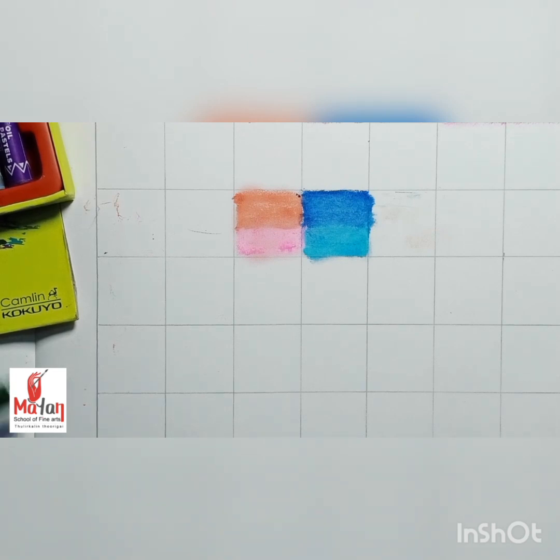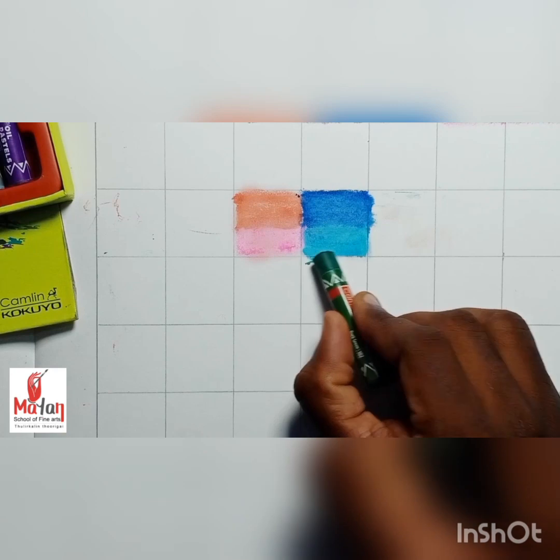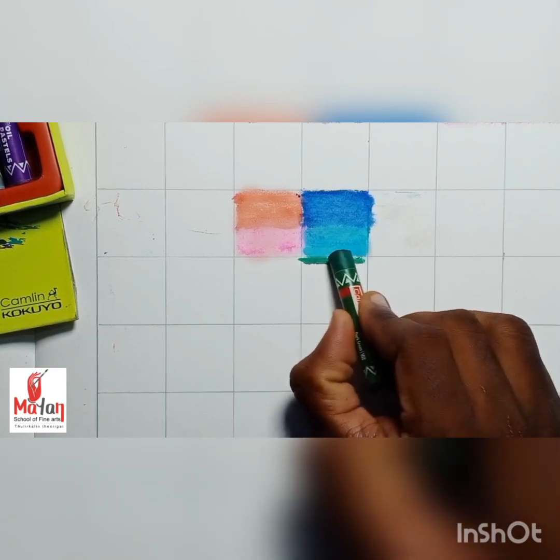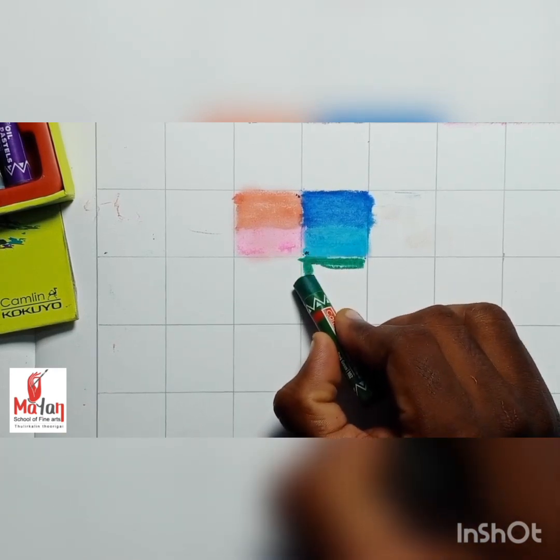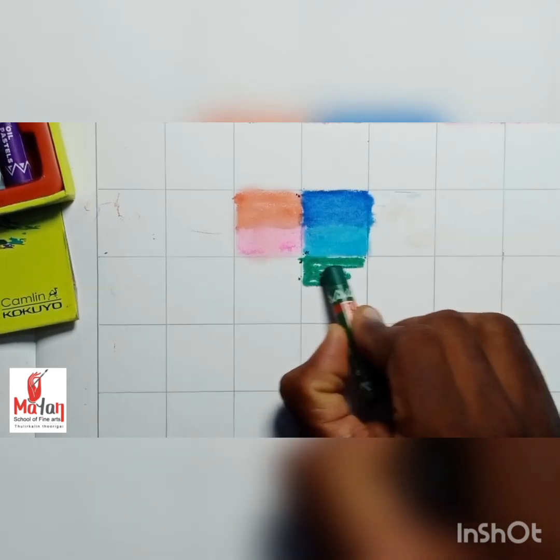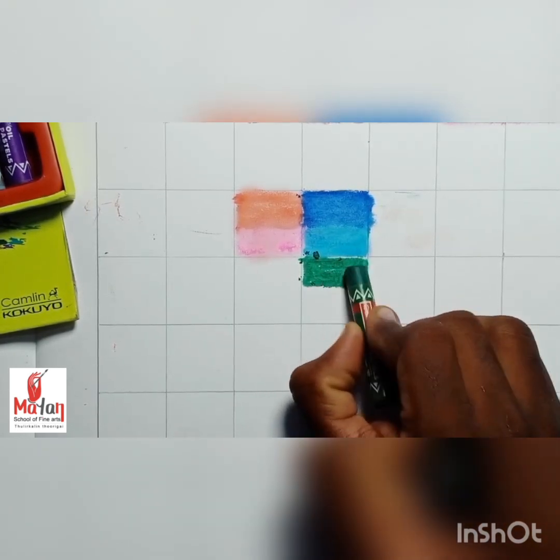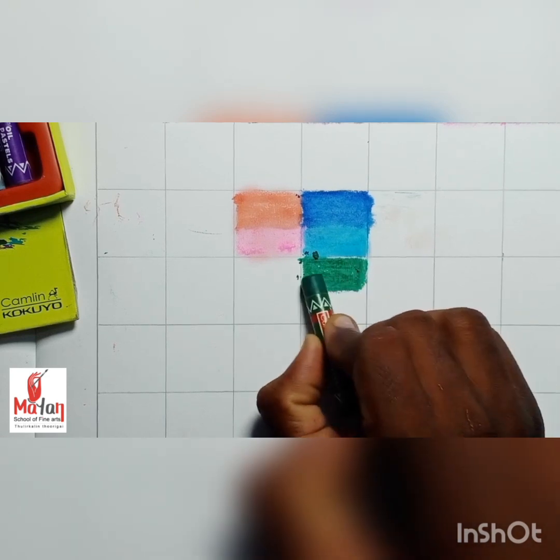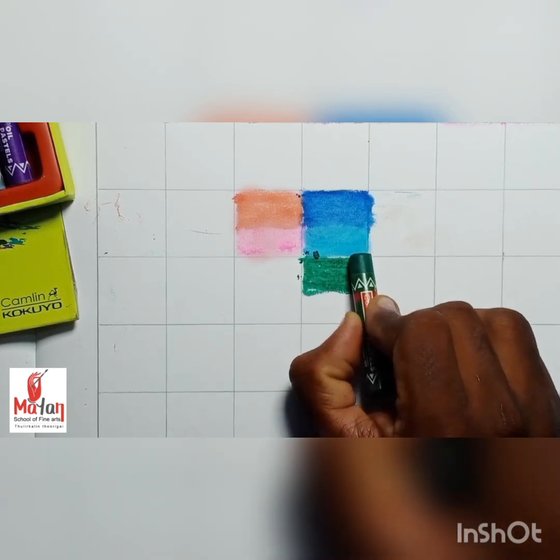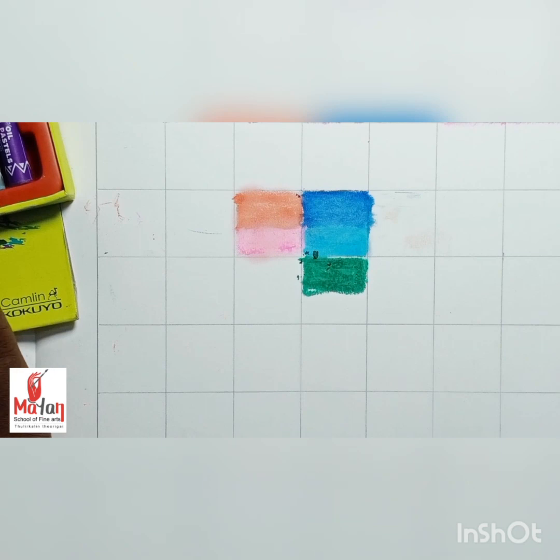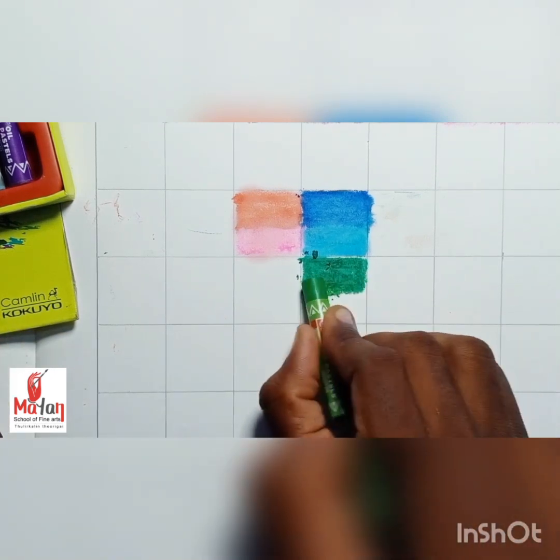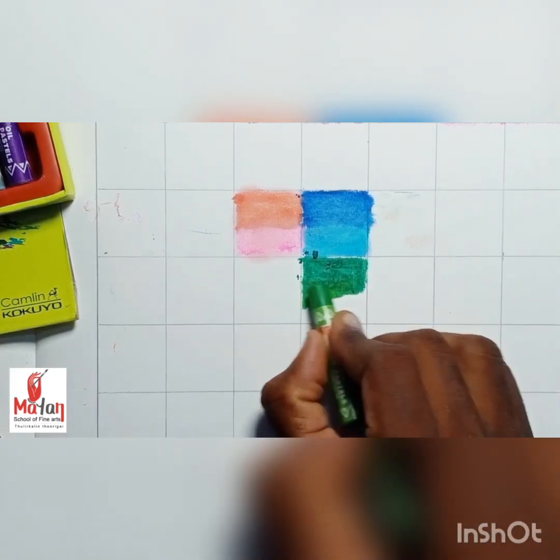I take the dark green, apply it on the first half of the cell. I complete the first half. Then I take the light color, light green.